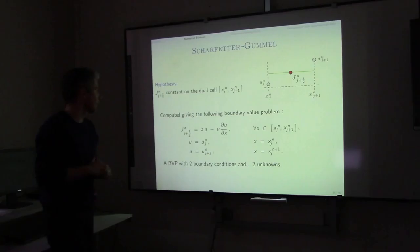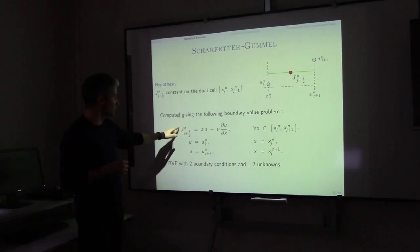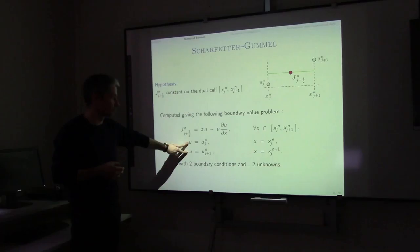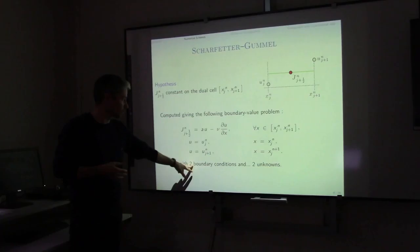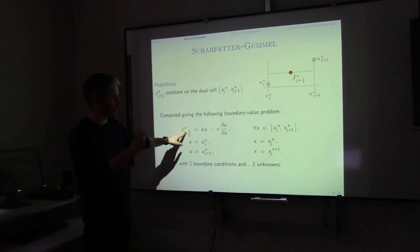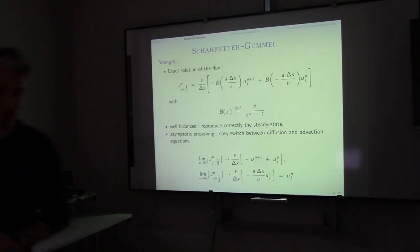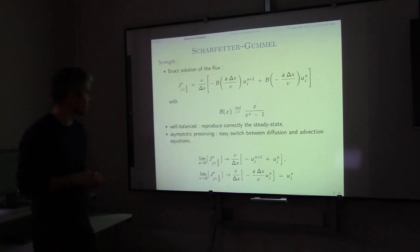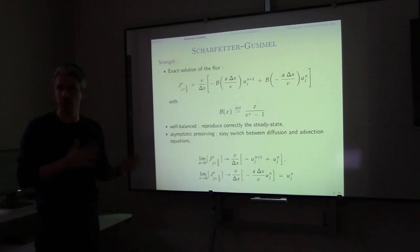The Scharfetter-Gummel (SG) scheme assumes that the flux J is constant on the dual cell. We have a boundary value problem (BVP) with two boundary conditions — we know U_G and U_{G+1} — and two unknowns: the flux J and U. This gives us an analytical expression for the flux, which is then computed from that BVP.